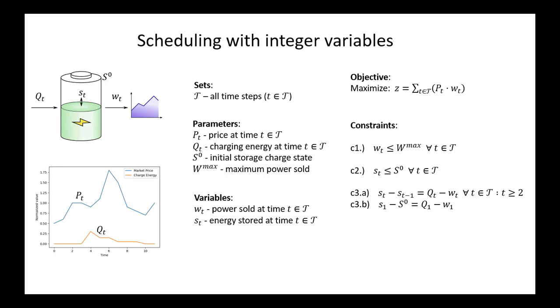The battery has a capacity, which is indicated by capital S superscript zero. It's receiving energy in the form Qt at time step t and producing energy at Wt, and it's trying to maximize the revenue that it's getting from selling electricity at any moment in time, which is captured by the price schedule capital Pt.